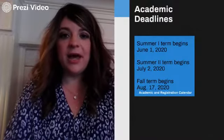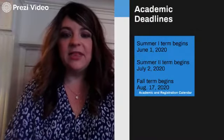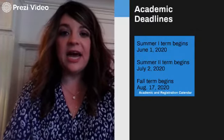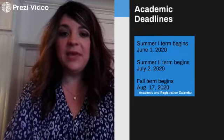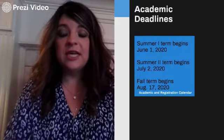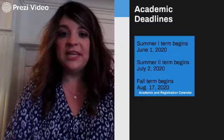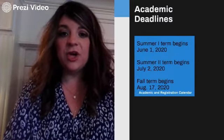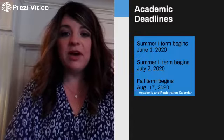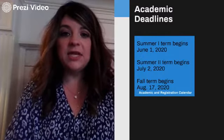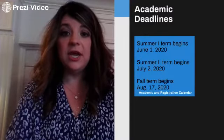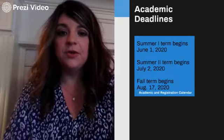Next up, I want to talk about academic deadlines. Each semester has a deadline — a time when it ends and a time when it begins. Summer 1 begins June 1st, Summer 2 begins July 2nd, and the fall term begins on August 17th. You can find more academic deadlines on your academic and registration calendar in your MyUafs account.